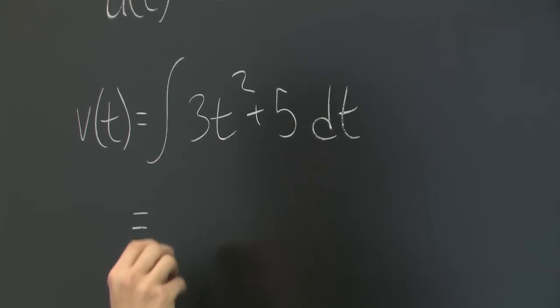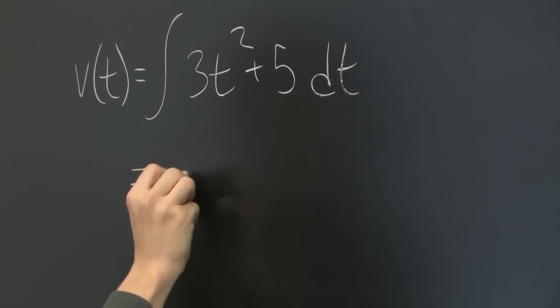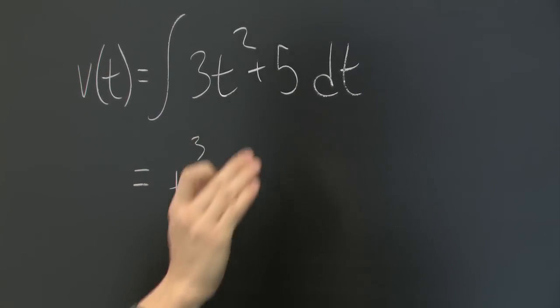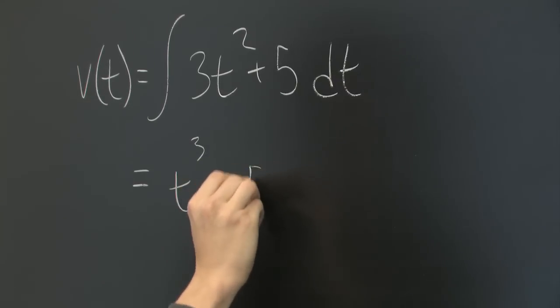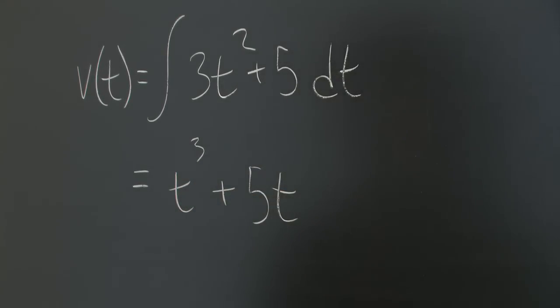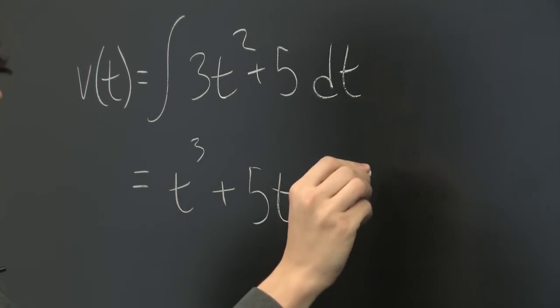So, the integral of 3t squared, we get t cubed, 5, we get 5t, plus some unknown constant c.